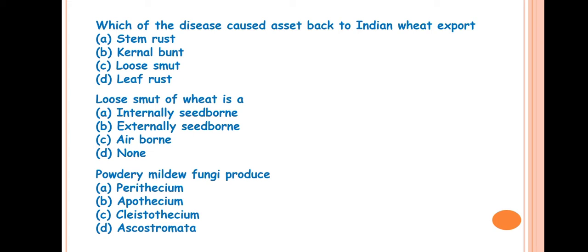Next question is, which of the disease caused setback to Indian wheat export? The answer is B, Karnal bunt. This is a very important disease of wheat and causes heavy loss. This is also known as cancer of wheat. This was first discovered by Mitra in 1931 in Karnal, Haryana. About the symptom, some grains in the spike are partially or wholly converted into black powdery masses. This fungus is both soil and seed borne in nature, whereas secondary spread occurs through airborne conidia.